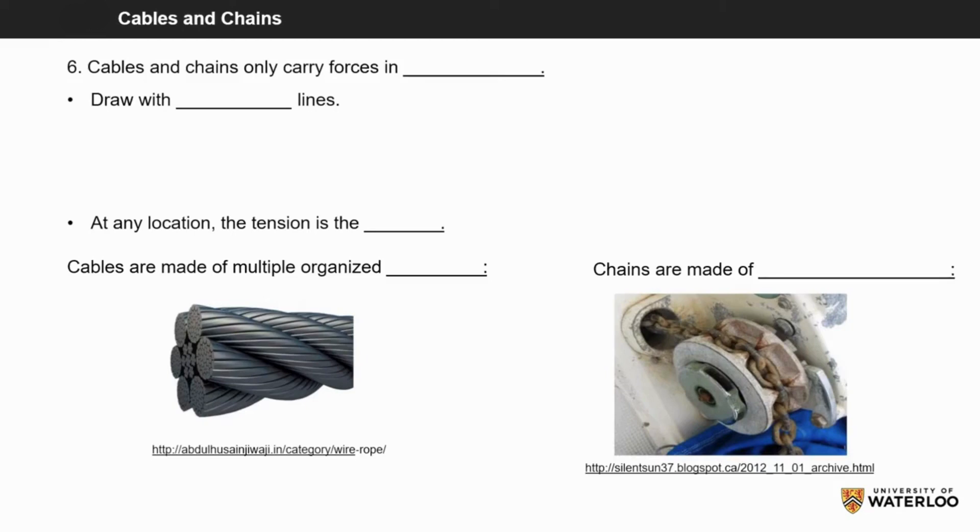Cables and chains are categorized together because they only carry forces in tension and not in compression or bending. We draw both cables and chains with straight lines because that shows they are under tension. Note that generally in mechanics we will not draw them out unless they are straight and under tension.